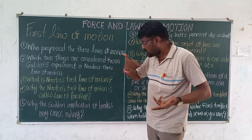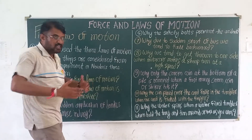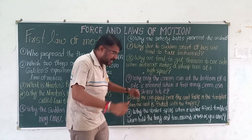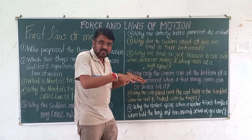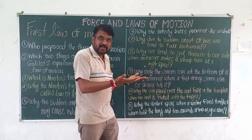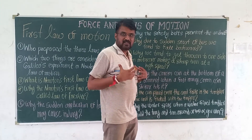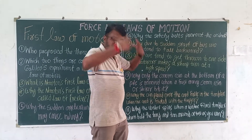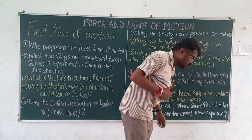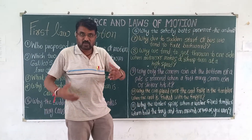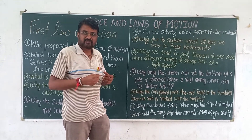Now some examples of inertia. Why does the sudden application of brakes cause injury? If a car is driving and the driver suddenly applies the brakes, force is applied on the car and on your legs and the sitting portion, but force is not applied on your upper body part. So the upper body part will go forward and cause injury. This is due to inertia — our upper body part wants to maintain its inertia and resist the change.